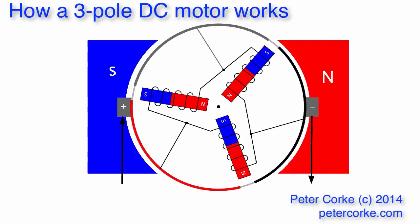The current flows from the positive brush to one of the commutator segments, the positive segment which is shown in red. The current then follows two different paths. One path takes it through a single electromagnet to the negative commutator segment which is shown in black. The other path takes the current through two electromagnet coils in series.